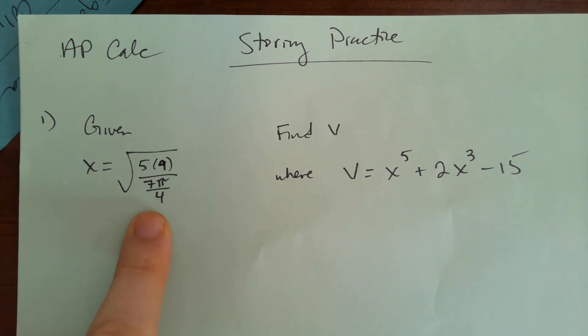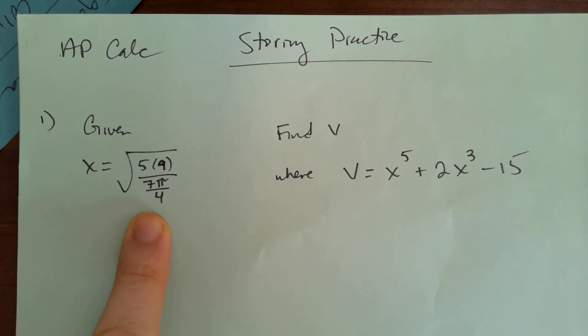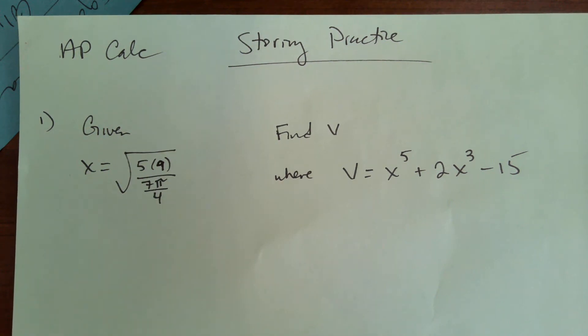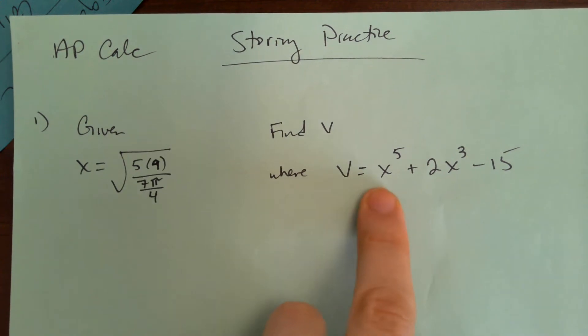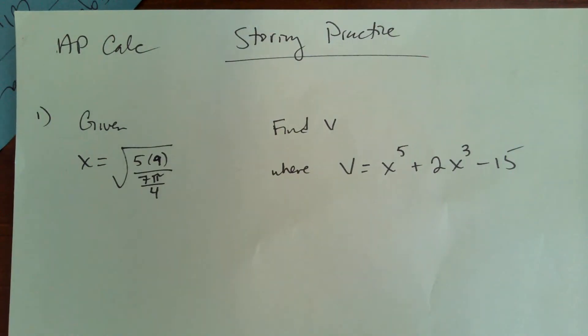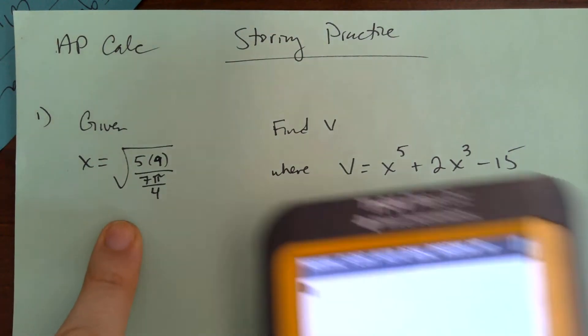So we're given that x is equal to this number, which is irrational. I know it's irrational because of the square root of non-perfect squares are involved, and then also the pi is irrational. So we're going to find V. So this is what x is, and then V is this. We're going to find the value of V given this value of x and storing.